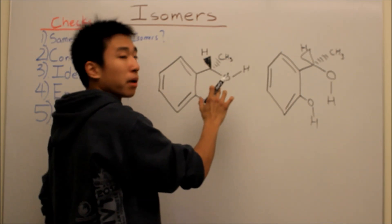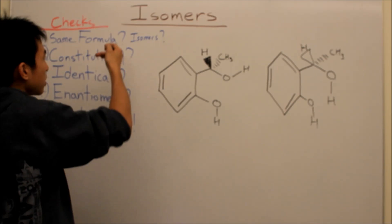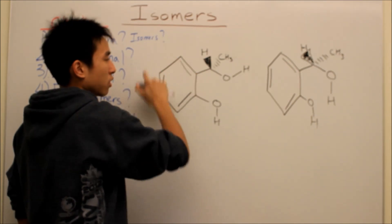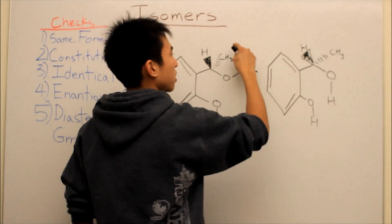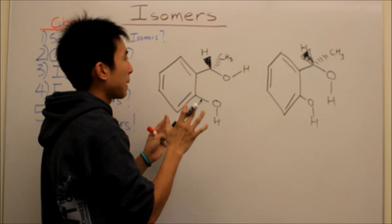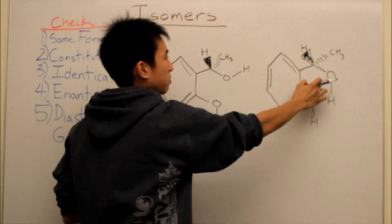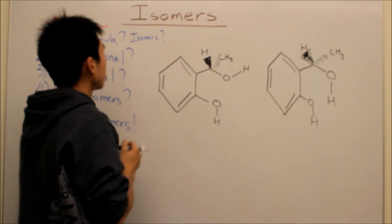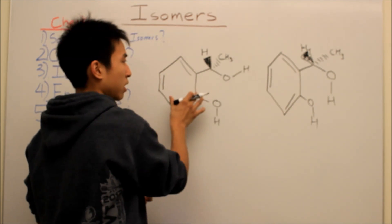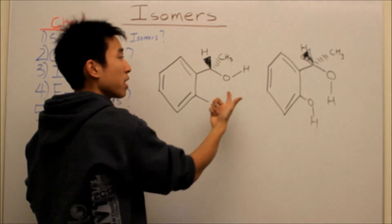For this one here, it looks almost exactly the same, but the hydrogen here is facing up and the hydrogen here is going down. We can do the same formula check and see it's the same molecule — all carbons, oxygens, hydrogens — same thing. So they are isomers. Constitutionally they're the same because every single atom is bonded to the same corresponding atom in both examples. Next, do the identical check — is there any way we can manipulate this molecule so it looks like this one, by lifting and rotating or flipping? There's no way, so it's not identical.